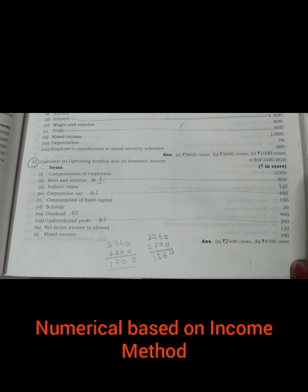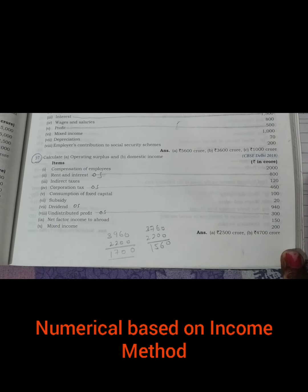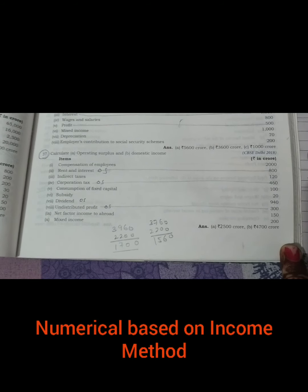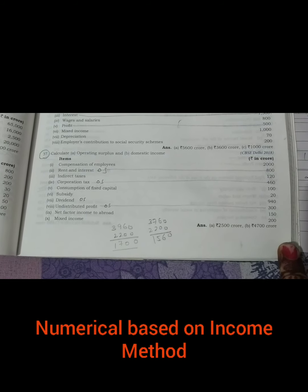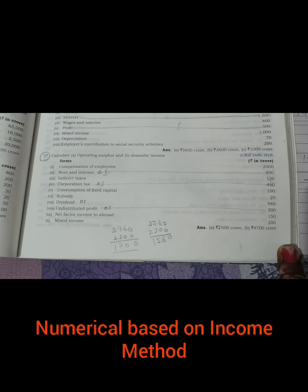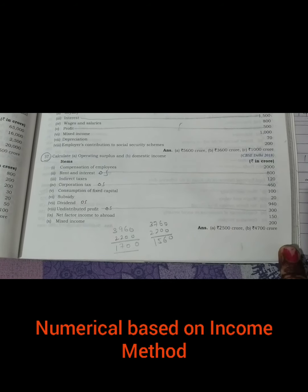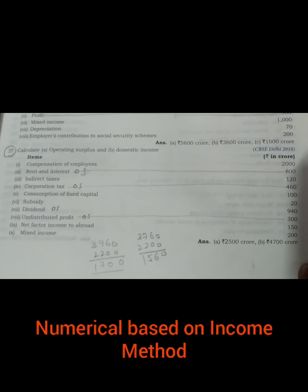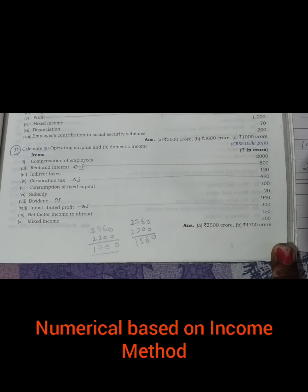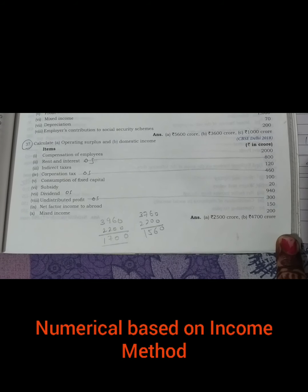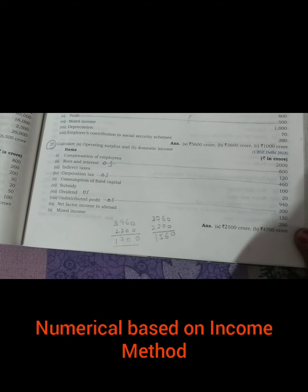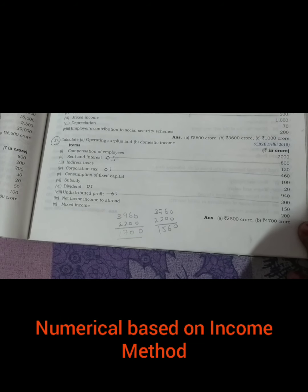See question number 37. In this question we have to find the value of operating surplus and domestic income. Domestic income means NDP at factor cost, because NDP at factor cost is equal to domestic income. The items given are: compensation of employees 200, rent and interest 800, indirect taxes 120, corporation tax 460, consumption of fixed capital (depreciation) 100, subsidy 20, dividend 940, undistributed profit 300, net factor income from abroad 150, and mixed income 200.